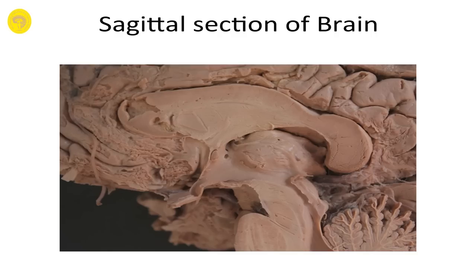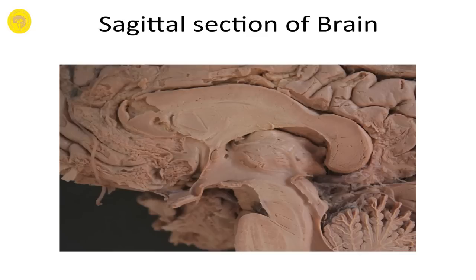Let us see the anatomy of the ventricles. Here is the sagittal section of the brain, showing the corpus callosum and its different parts. This is called the genu, the rostrum is here, the body of the corpus callosum, and the splenium.